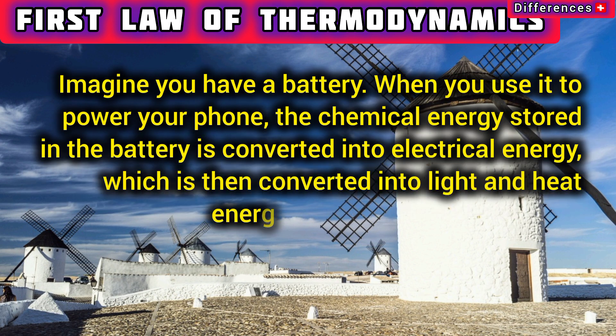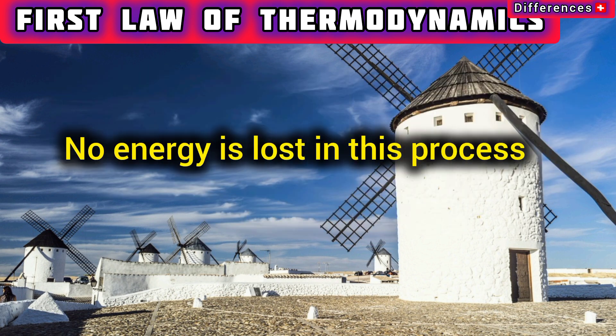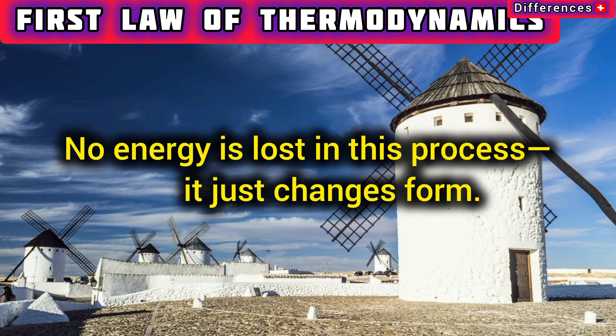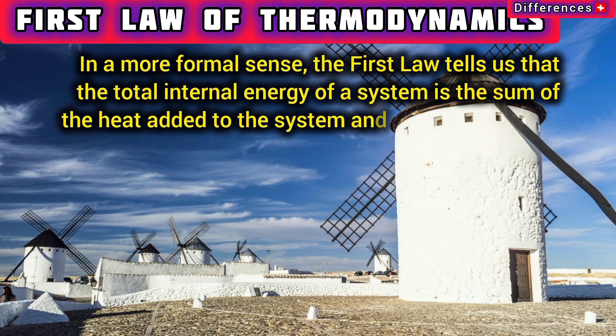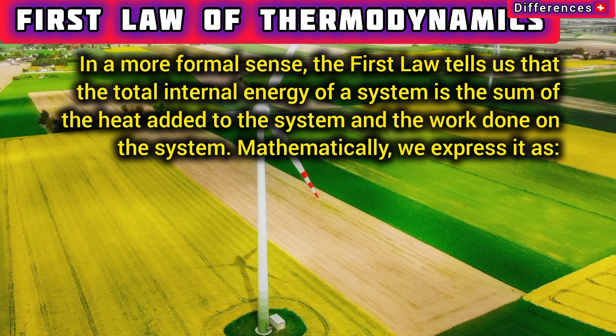When you use a battery to power your phone, the chemical energy stored in the battery is converted into electrical energy, which is then converted into light and heat energy by your phone. No energy is lost in this process — it just changes form.